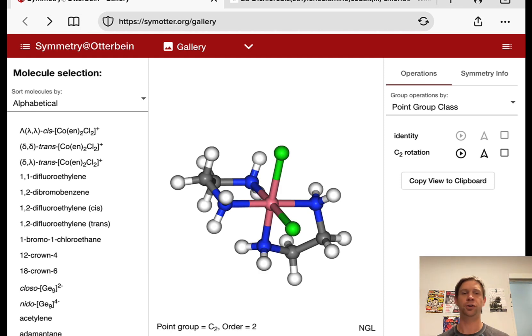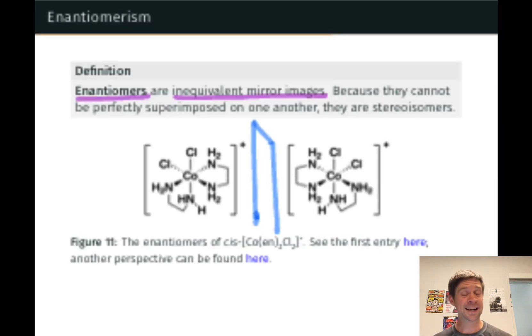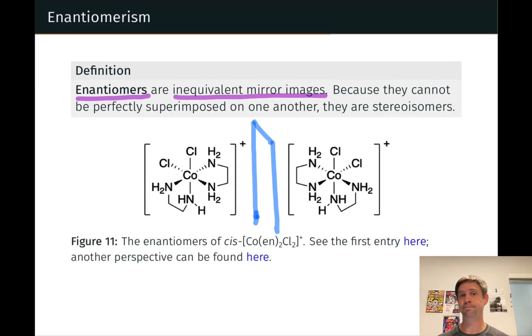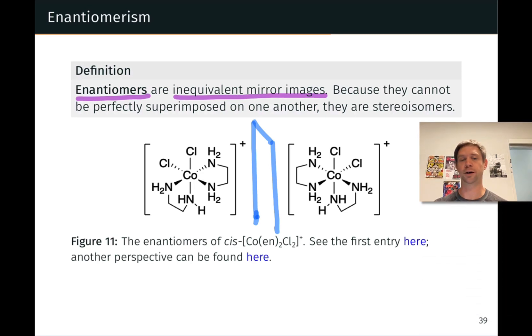you are identical to your mirror image. Your hands individually do not have a plane of symmetry internal to themselves. And so these are not the same as their mirror images. And each one has an enantiomer and they are the enantiomers of each other because they are mirror images. So enantiomers are inequivalent mirror images, mirror image molecules that cannot be perfectly superimposed on one another.